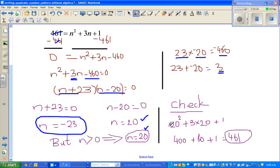So 20 squared in place of N squared plus 3 times 20 plus 1. So 20 squared is 400, 3 times 20 is 60 plus 1. So you can be very happy you got the answer and you can give yourself 5 stars.